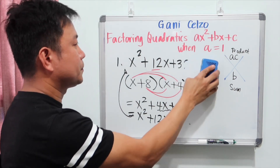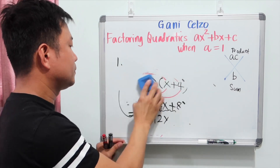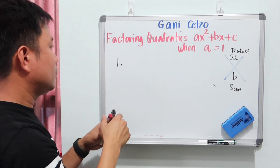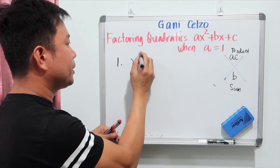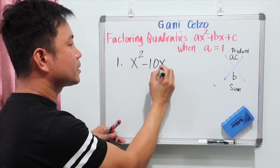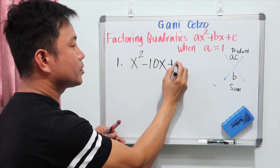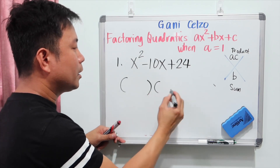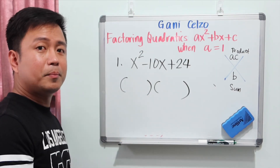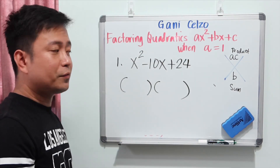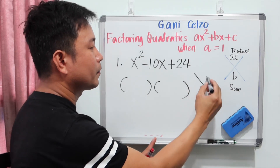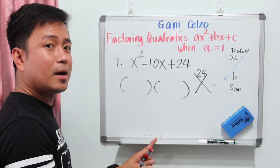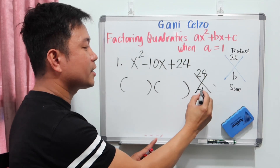Let's have example 2: x squared minus 10x plus 24. Here, we need a product of 24 and this time a sum of negative 10.